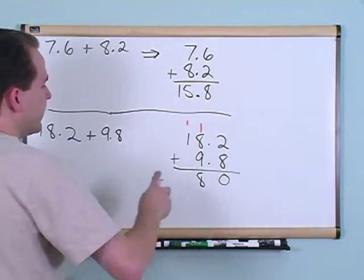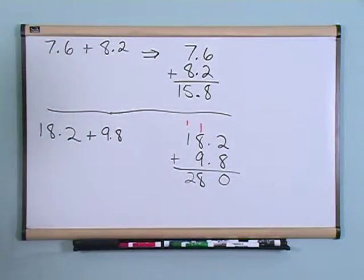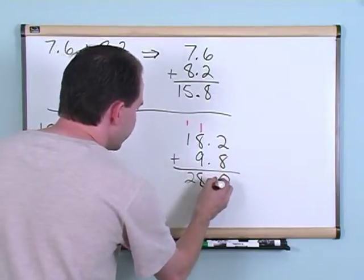And then finally, 1 plus 1 gives me 2. When you finish your problem, you take your decimals that you've lined up and drag it down and put it right between there.